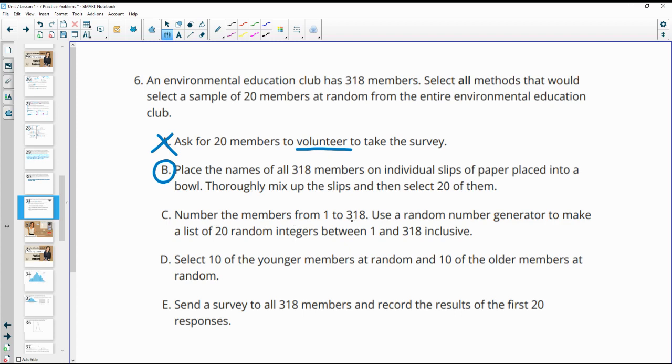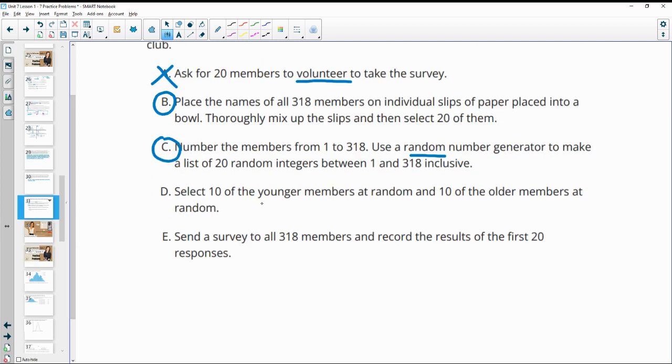Number the members 1 through 318. Use a random number generator to get a list. That's random. Select 10 of the younger and 10 of the older members. That is not random. That has a system behind it. Send a survey to all 318 members and record the first 20 responses. That is not random.